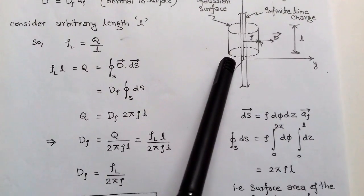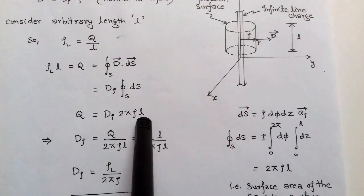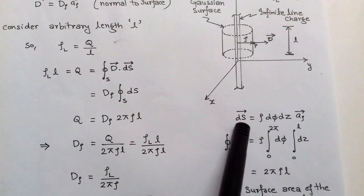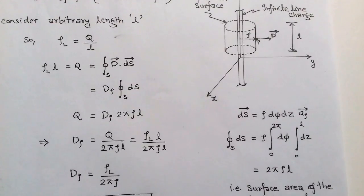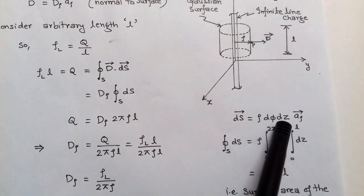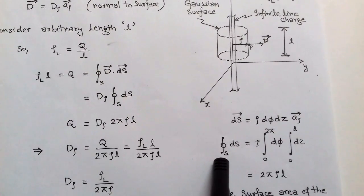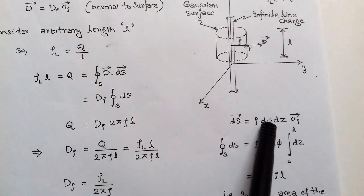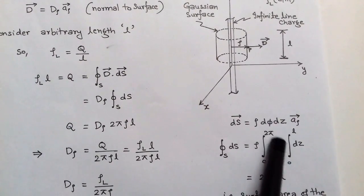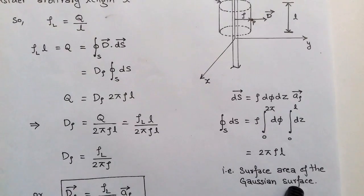The surface area of the cylinder is 2π × radius × length, that is 2πρl. This can also be calculated using the differential length in the cylindrical coordinate system. The differential surface in the direction of ρ is ρ dφ dz. Integrating with φ from 0 to 2π and z from 0 to l, we get 2πρl as the surface area of the Gaussian surface.